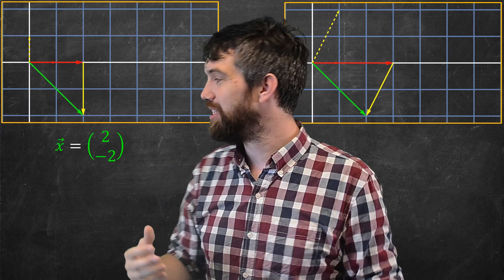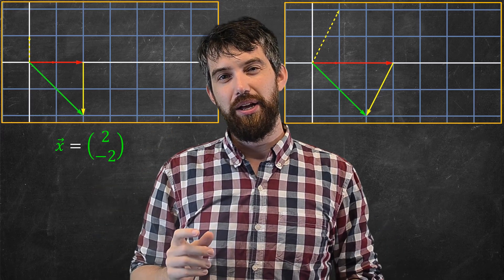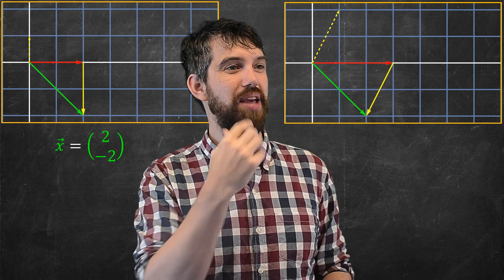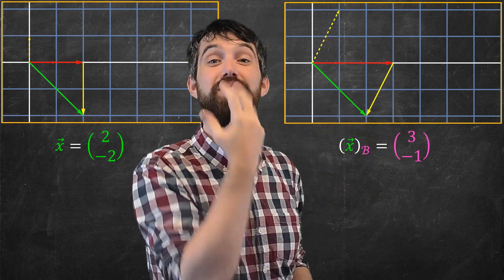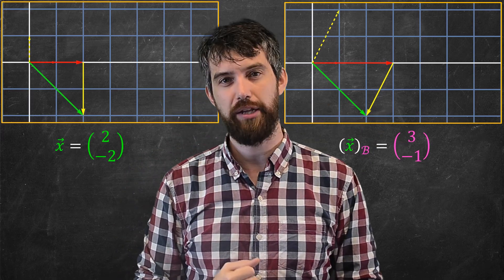For the standard basis, we just write it as (2, -2), and we don't do anything else, that's just it. But if it's the non-standard basis, I better tell you about it. So, I'm going to write the value of x, and I'm going to put the sub b, so that you know I'm talking about this particular basis, and now I get the value of (3, -1).